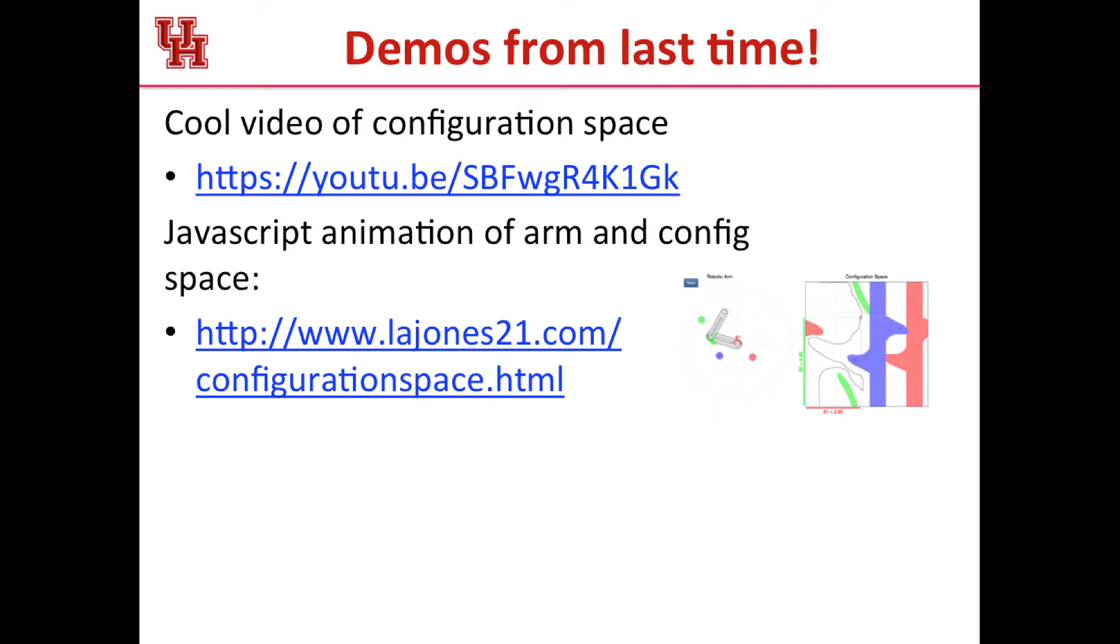Now just some demos that we saw last time. Last time we looked at this very cool video of the configuration space for a robot, which was a polygonal robot that could move in the plane, and so it could rotate or move around. So please watch that. I also showed you this cool JavaScript animation where you can move a two-link robot arm and you can see the obstacle fields, what they look like.